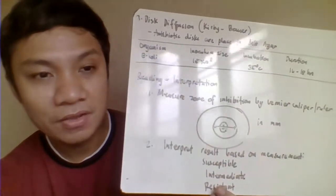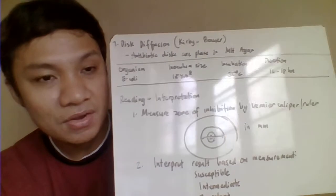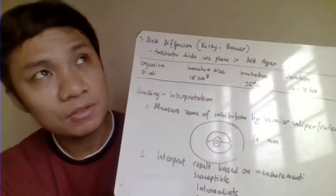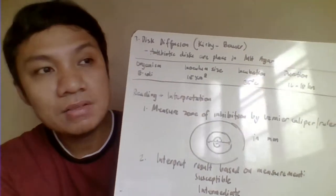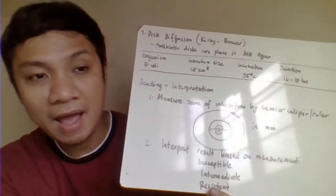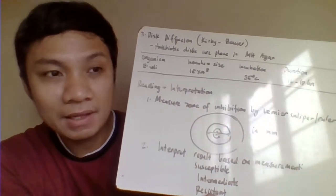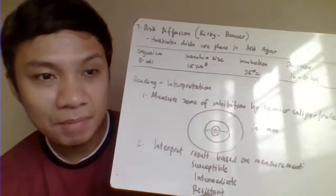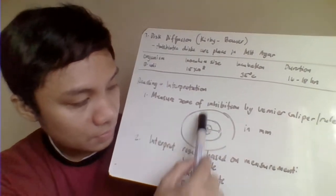The most popular method is disk diffusion, specifically the Kirby-Bauer method. In this method, antibiotics are provided on commercially prepared antibiotic discs — you do not need to dilute the antibiotic yourself. For research purposes, you can use paper discs and absorb plant extracts at different concentrations onto them. The procedure begins with a standardized bacterial inoculum, which is streaked evenly onto the plate for uniform growth.